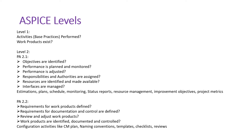PA 2.1 is talking about: objectives are identified, performance is planned and monitored, performance is adjusted, responsibilities and authorities are assigned, resources are identified and made available, and interfaces are managed. It covers estimations, plans, schedule, monitoring, status reports, resource management, improvement objectives, project management, and metrics.